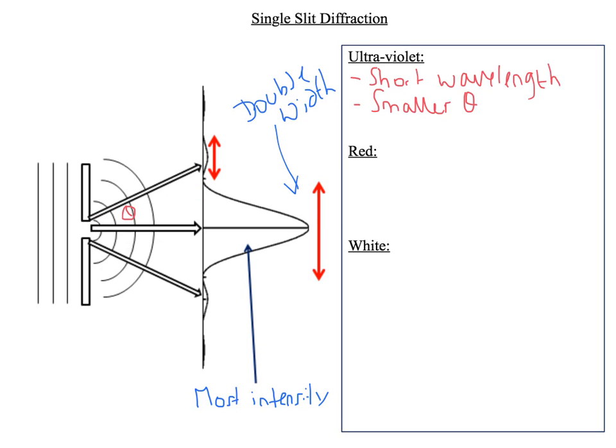So conversely, red has the longest wavelength of all the visible light, which means it has a bigger angle of diffraction or a bigger theta. So you'd expect to see a red peak wider like this and a blue-violet peak sort of here. So with red, the fringes are more spaced out.